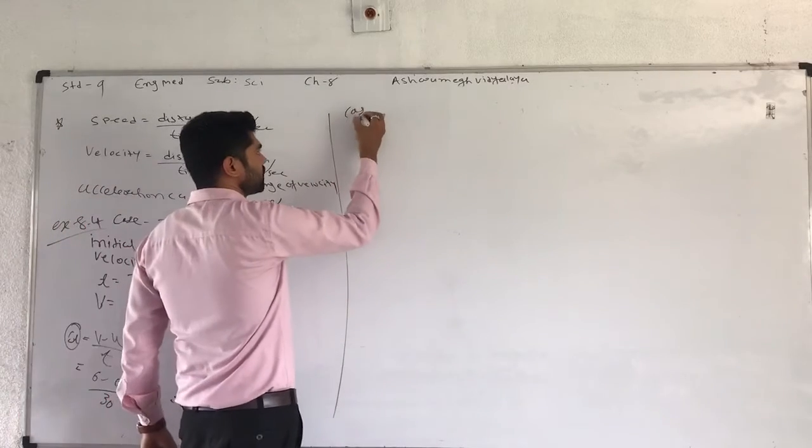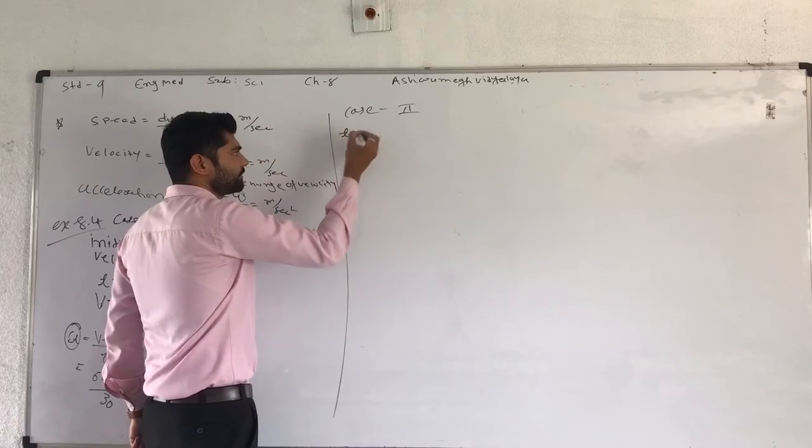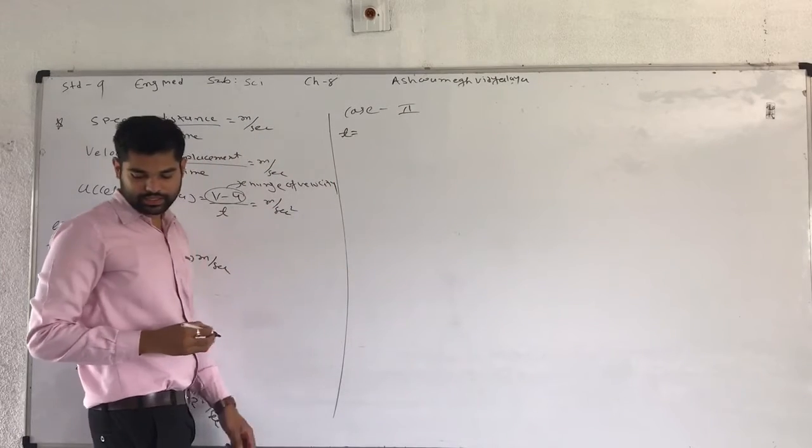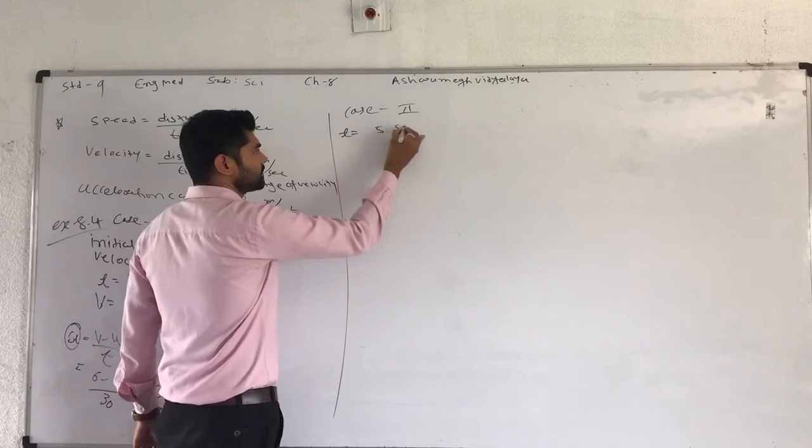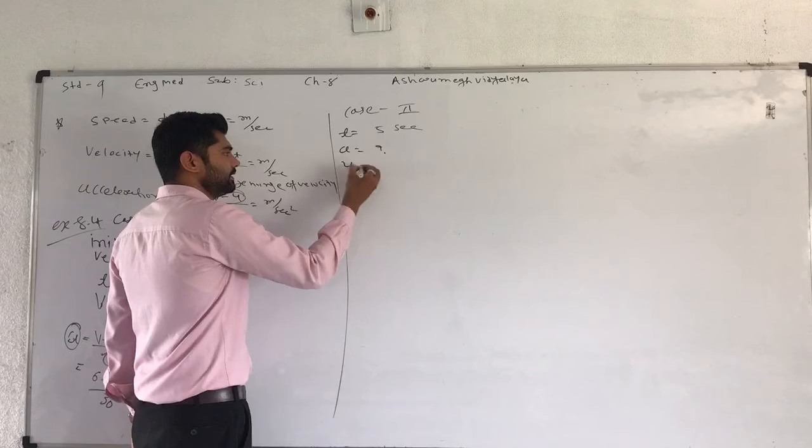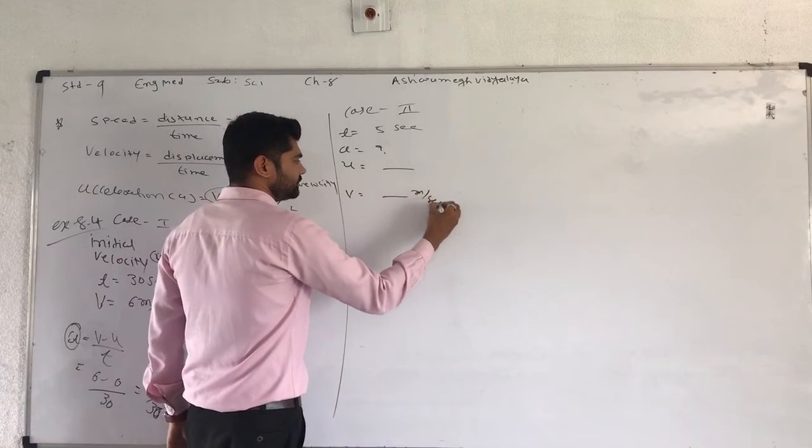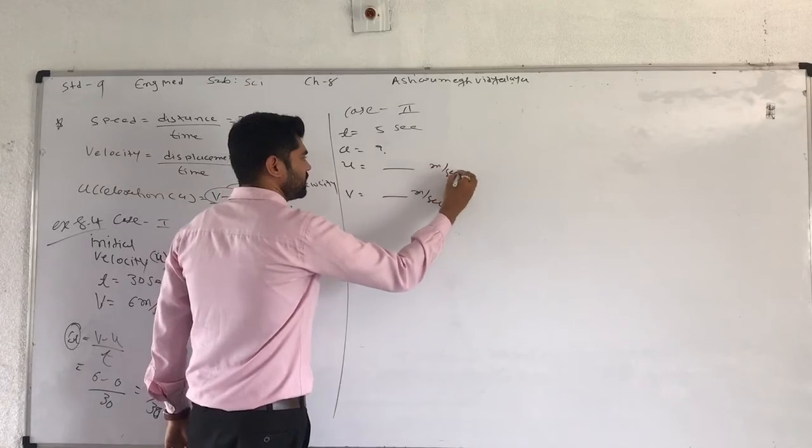Value of time, time is given, 5 seconds. Value of A, find initial velocity and final velocity.